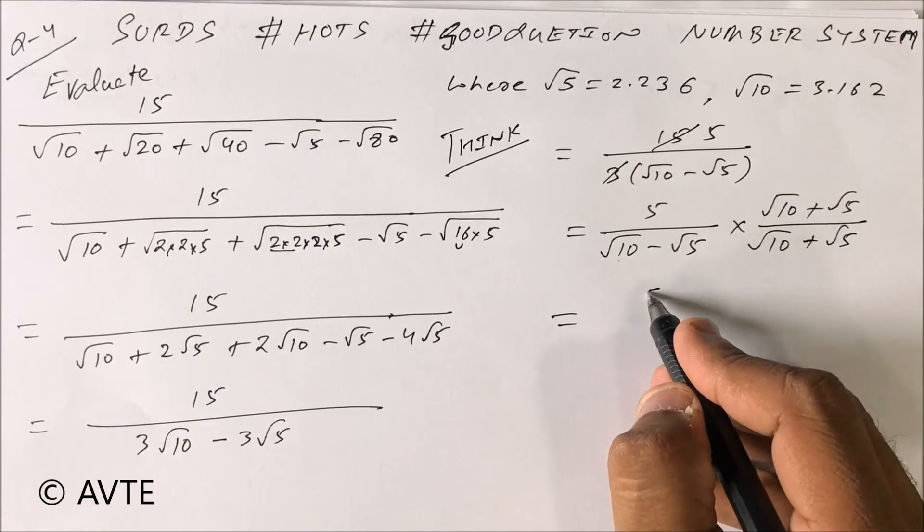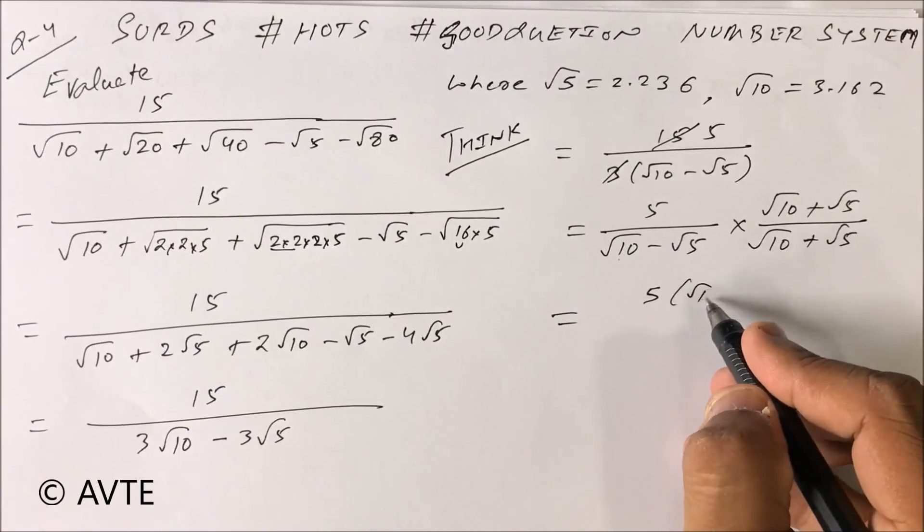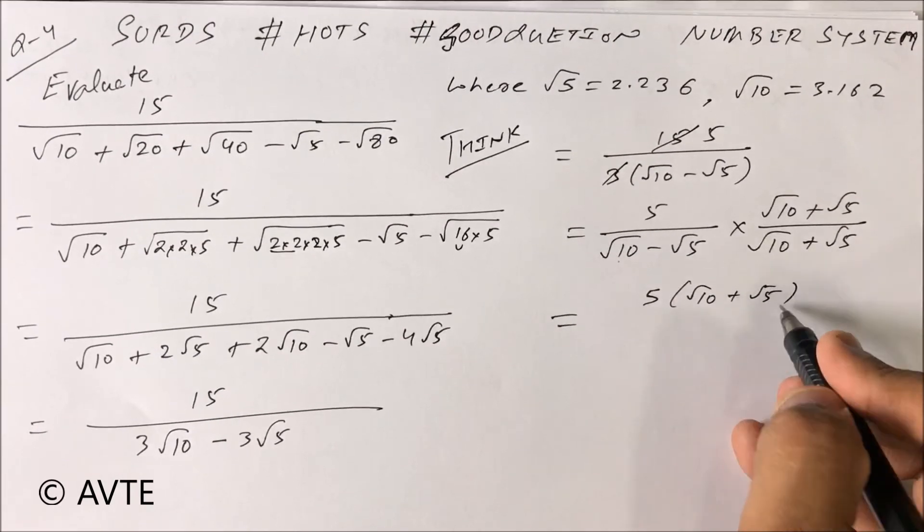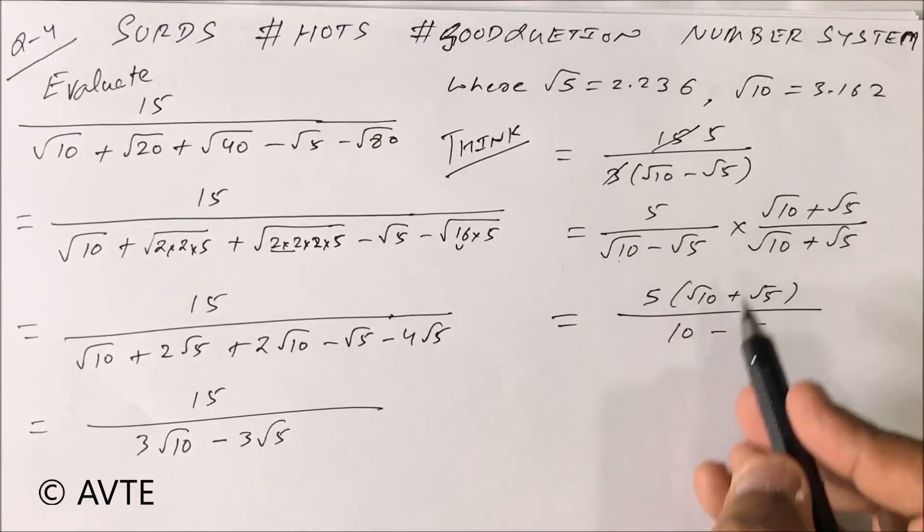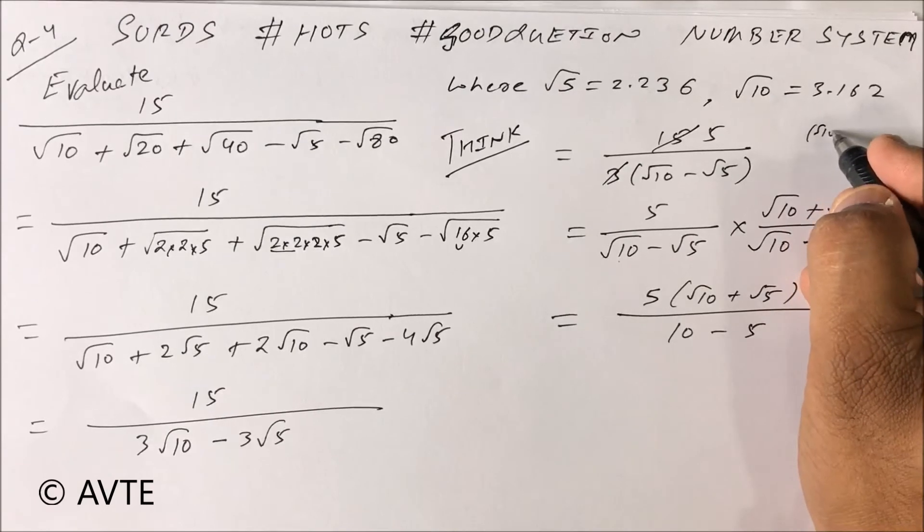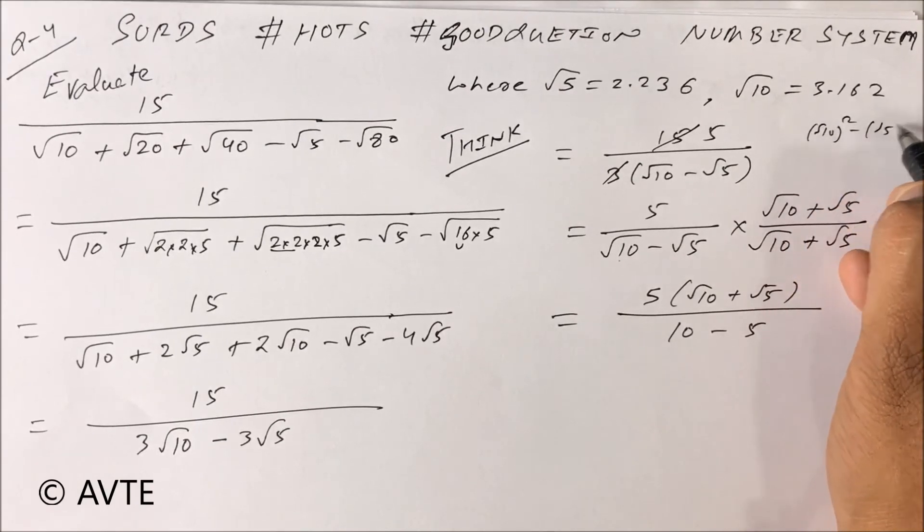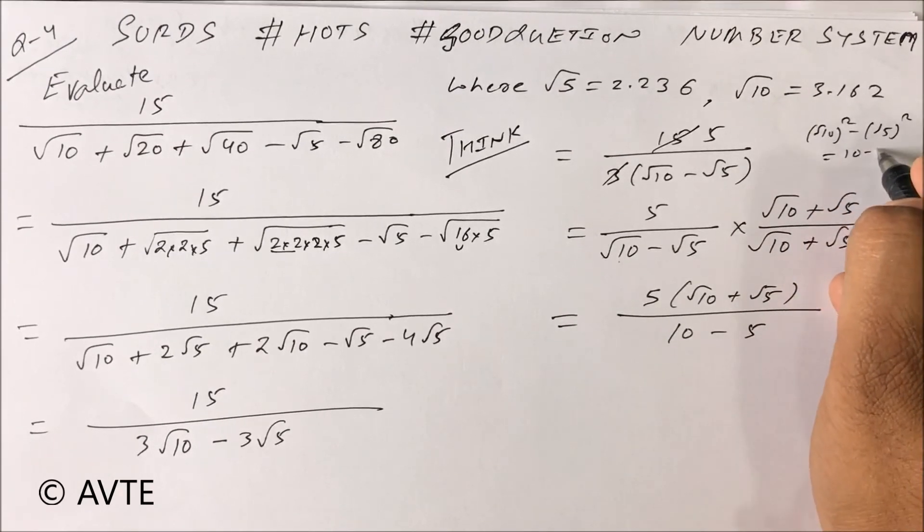So this is 5 in bracket root 10 plus root 5, and in the denominator you can apply a formula a square minus b square, that is root 10 squared minus root 5 squared, that is 10 minus 5.